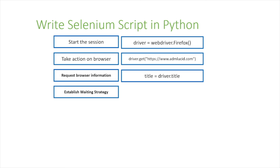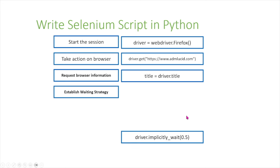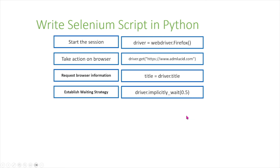After that, depending on what you want to test, you can establish different waiting strategies. An example of a waiting strategy is `driver.implicitly_wait(0.5)` seconds. You can have different types of wait strategies — for example explicit waits and implicit waits — and we'll cover this later in the video.